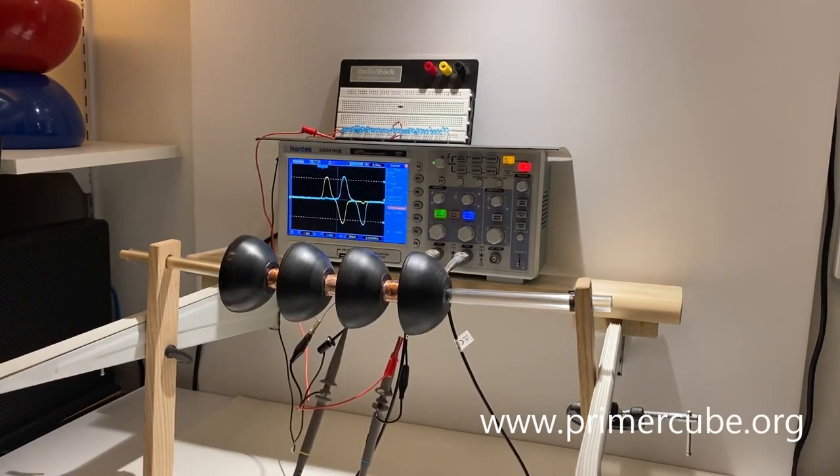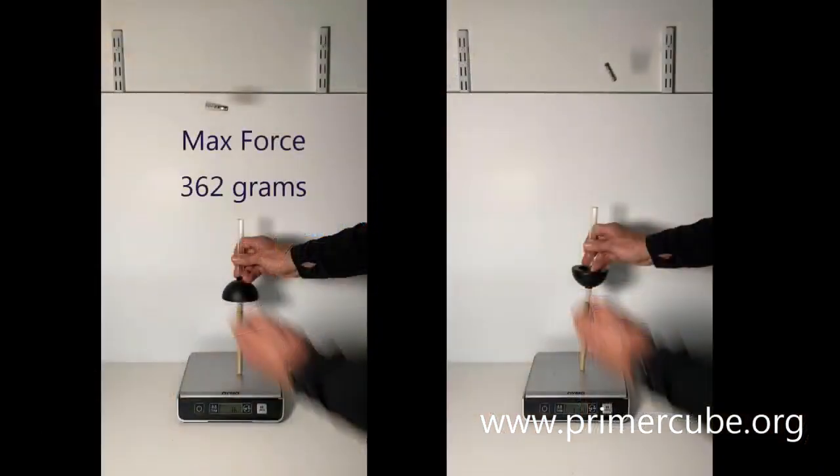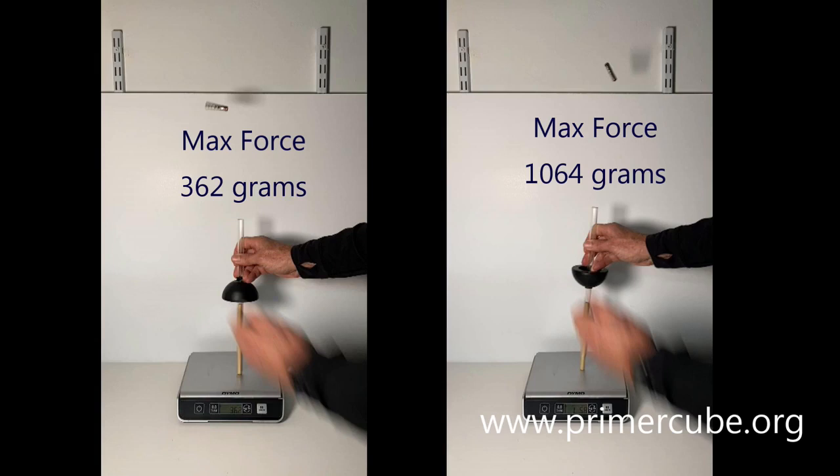This is very logical if we look back on the test we ran earlier. With the bowl array in the direction shown on the right, 1064 grams of force is required to get the seven magnets to shoot through the array. But with the bowl array in the direction shown on the left, only 362 grams of force is required to shoot the magnets through the array.